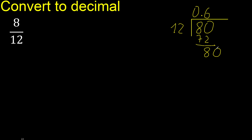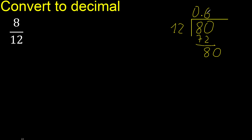Complete. Always complete with 0, because here that is not a number. 0 point 80. 12 multiplied by 6 is 72. Subtract, complete with 0.